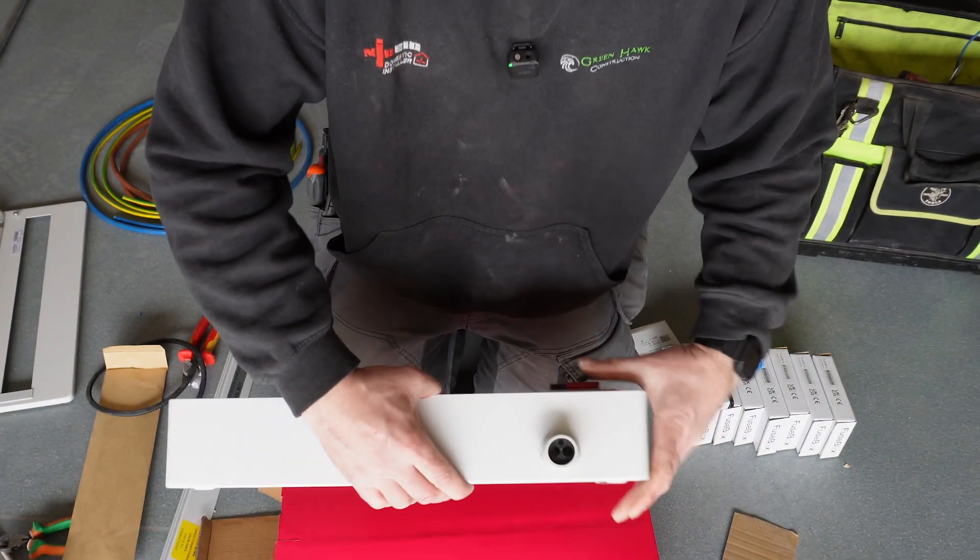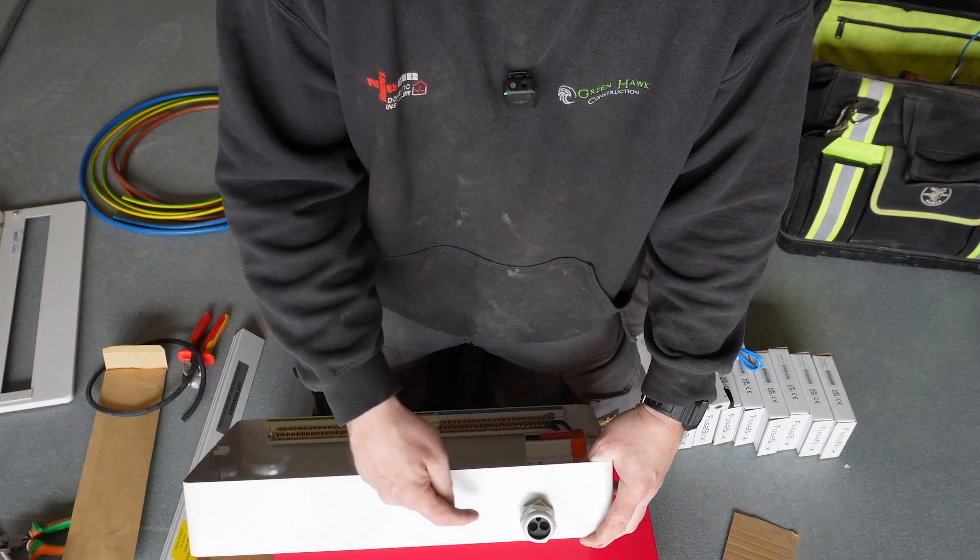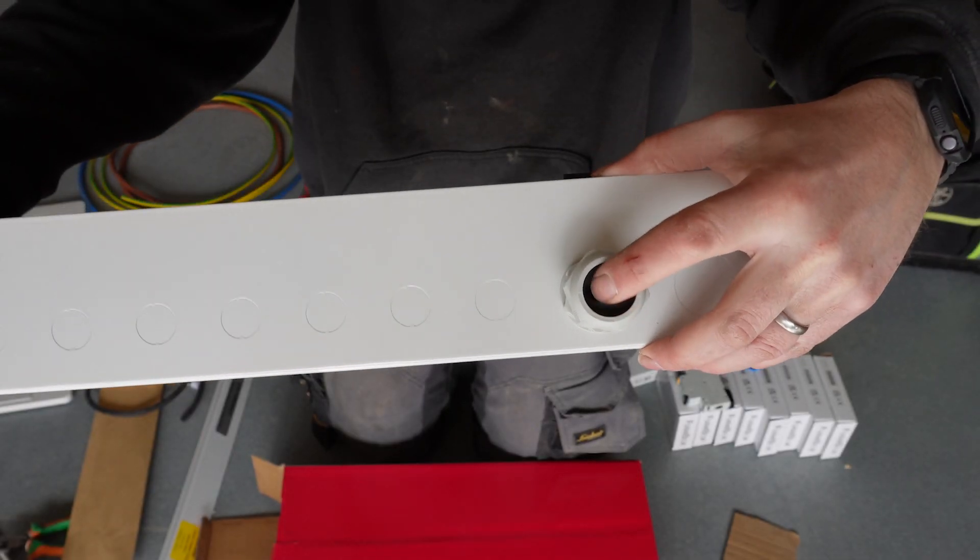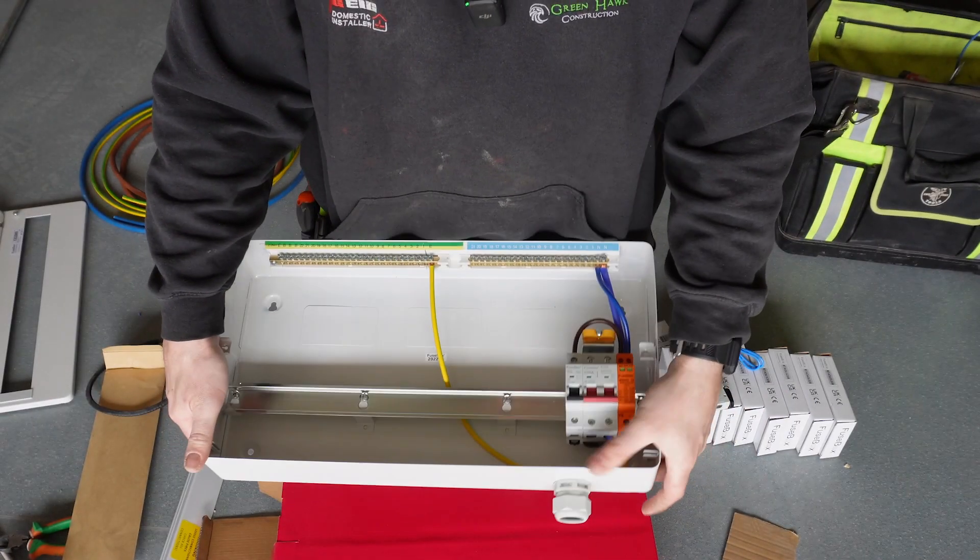What you want to do is make sure that the two larger holes on the actual gland inside are towards the back, because once you've done that, the meter tails are tucked behind the DIN rail a bit easier.